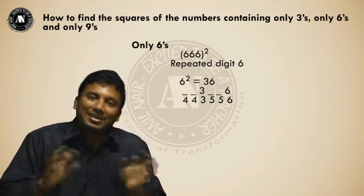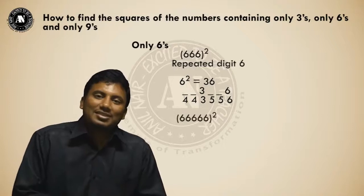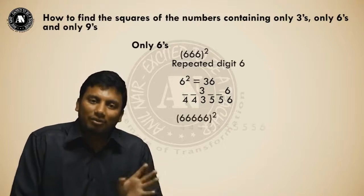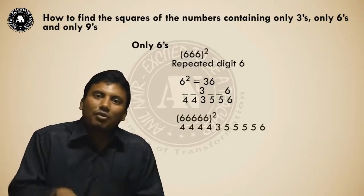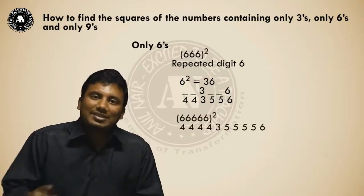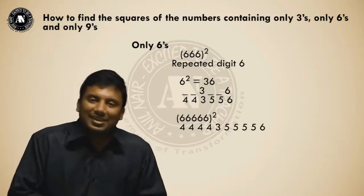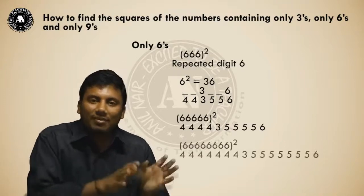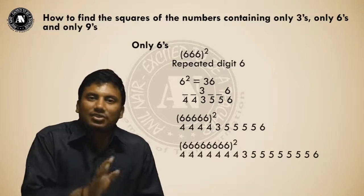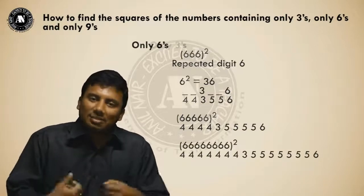Similarly, if five sixes squared: the answer is four fours, three, four fives, six. If eight sixes squared: the answer is seven fours, three, seven fives, ending with six.